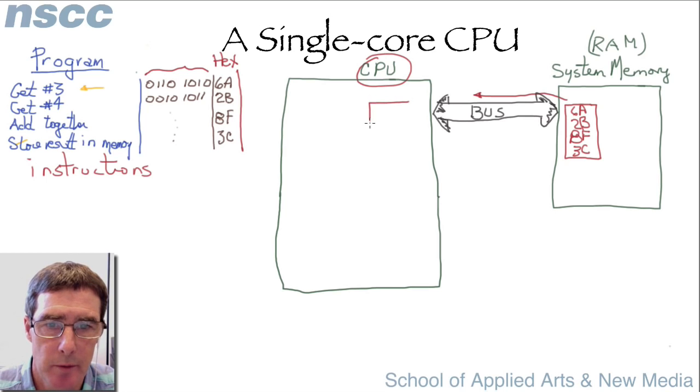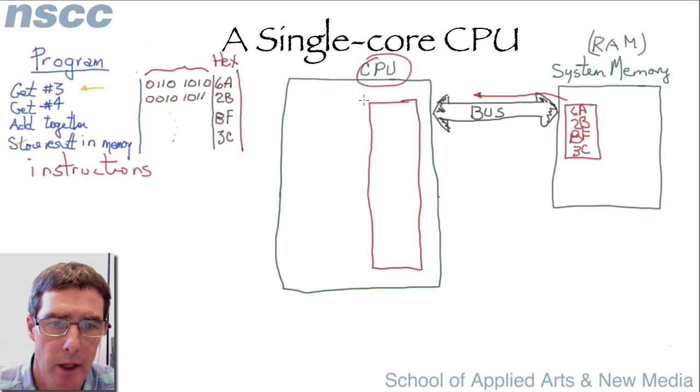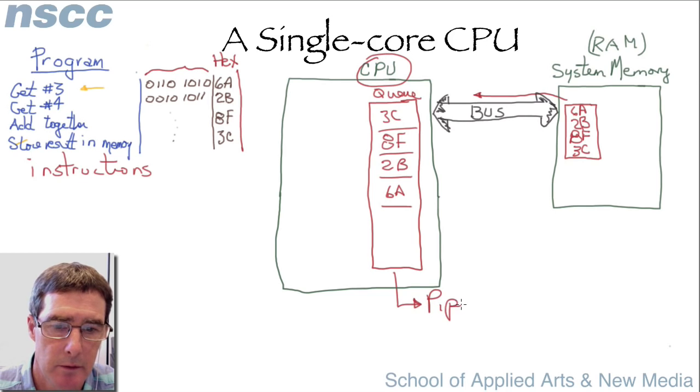Now, once a program goes into a CPU, you can think of it as going down a long queue to be processed. So all these instructions work their way down this queue. Now, this long queue is often given the name pipeline.